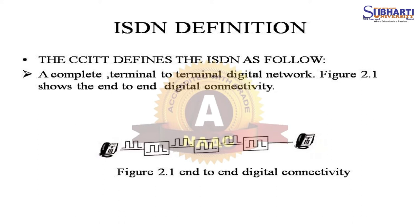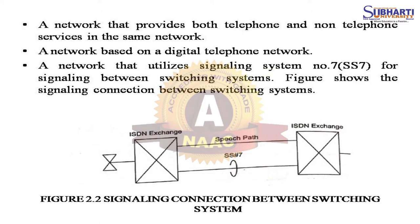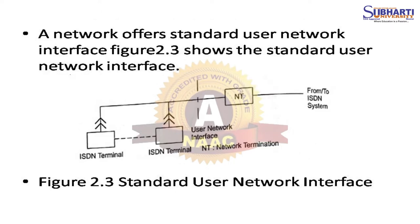ISDN Definition: The CCITT defines ISDN as follows. A complete terminal-to-terminal digital network, showing end-to-end digital connectivity. A network that provides both telephone and non-telephone services in the same network. A network based on a digital telephone network. A network that utilizes Signaling System Number 7 for signaling between switching systems. A network with a standard user-network interface.